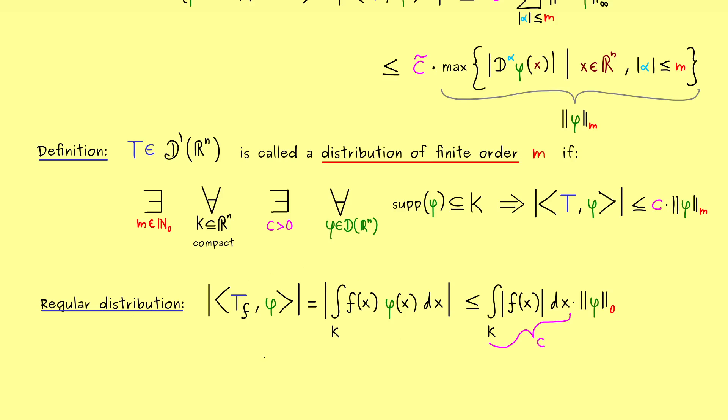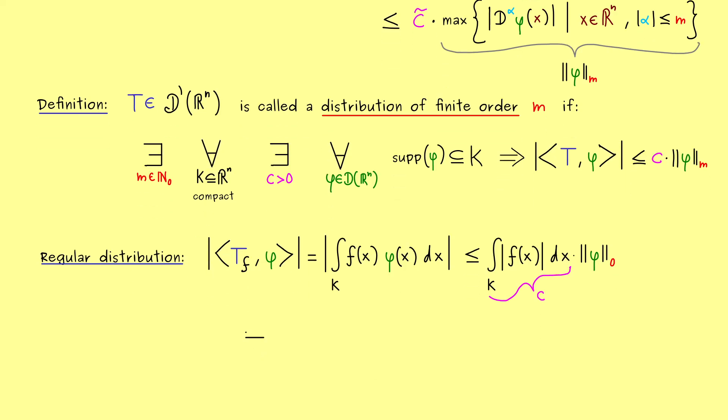Hence, all regular distributions are of order 0. However, it is not hard to show that also the delta distribution is of order 0.